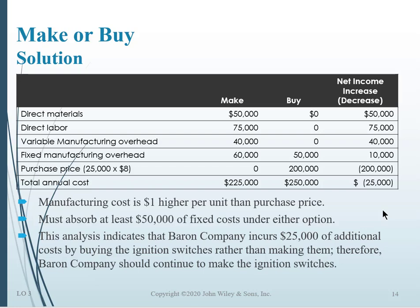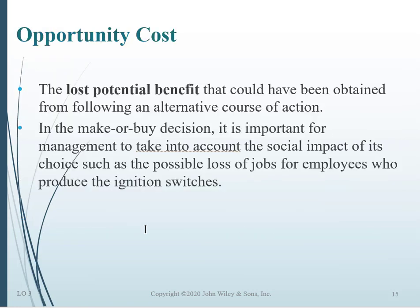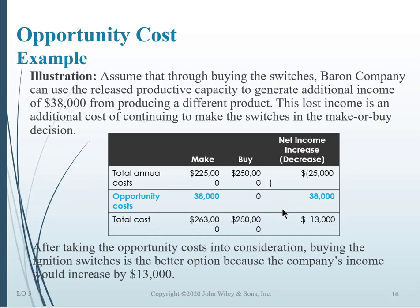But have we taken everything into account? Does this give us a true picture of what's going to happen to the company? Is there any collateral damage that could be done? For instance, what are we going to do with these people? If we buy the switches, we don't need this labor anymore. Are we going to lay people off? Are we going to have some turnover? How is that going to affect us? This is what we refer to as an opportunity cost — there's going to be an impact to the company from taking one path over another. In this case, it's going to be the loss of jobs and potential turnover.